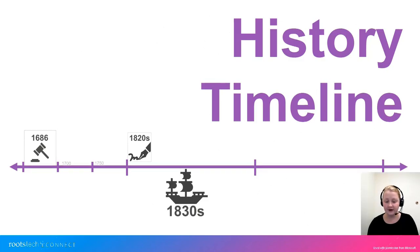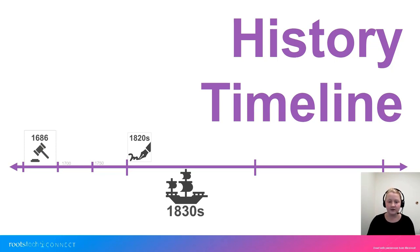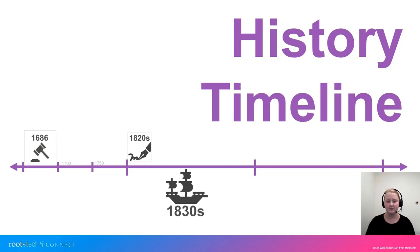The next landmark time frame is the 1830s, when immigration from Sweden started to pick up and people began leaving for America and other places around the world. Your ancestor likely moved from Sweden to America or elsewhere between the 1830s and the 1920s, and understanding this general culture of immigration helps contextualize when you're starting your research.